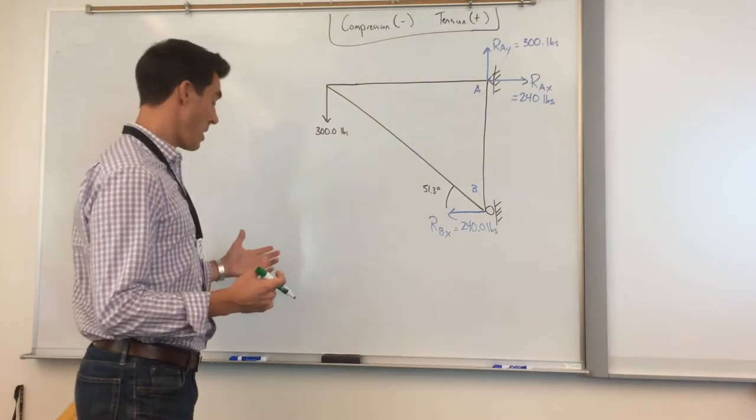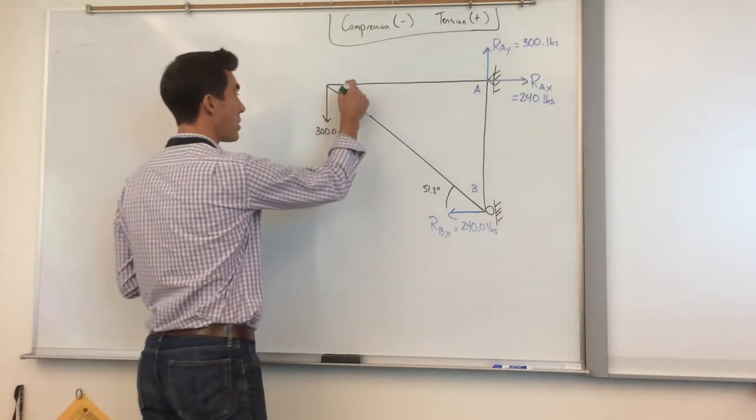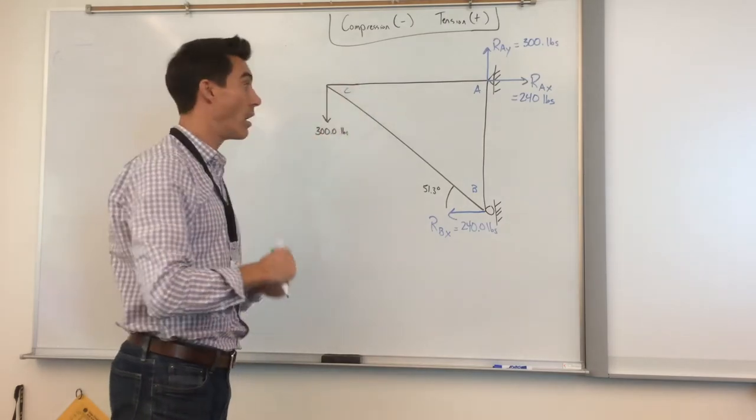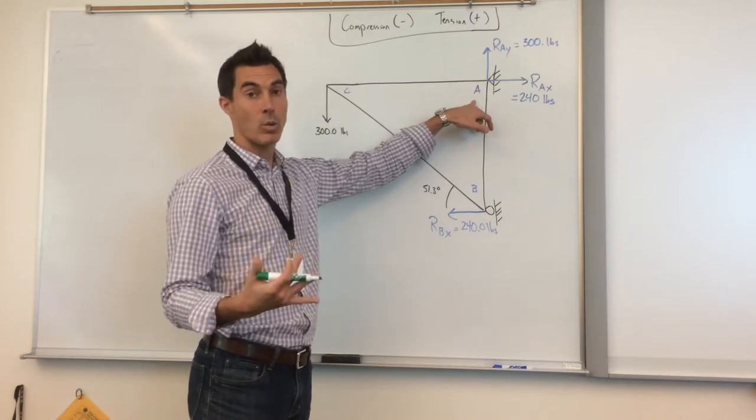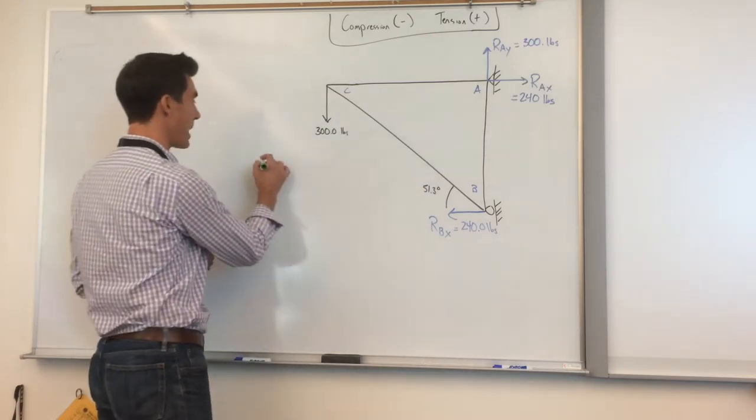All right, so now we have to pick a joint in which we want to start to do the method of joints. Looking at this, the easiest one is probably going to be A. And so we'll start with this and we draw our free body diagram.